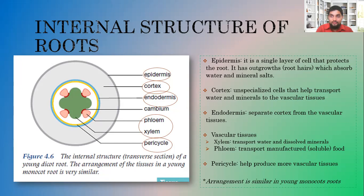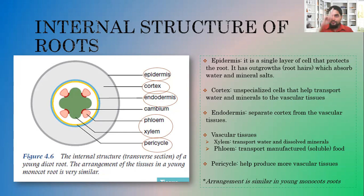Importantly, this arrangement is similar in young monocotyledonous roots — the internal structure of monocotyledonous and dicotyledonous roots is similar. You should also know that this is a transverse section. There are two main types of sections: a transverse section cuts across the width, while a longitudinal section cuts along the length of the organism.